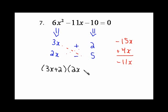And then when they're set to 0, 3x plus 2 equals 0, so x equals negative 2 over 3. And 2x minus 5 equals 0, and x is equal to 5 over 2.